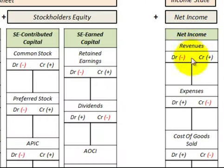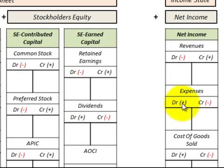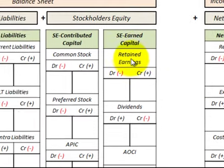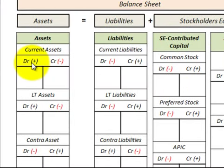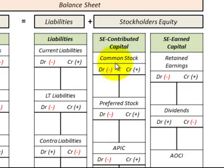Looking at the T-accounts for debits and credits: for revenues, a debit decreases and a credit increases. For expenses it's the opposite — debit increases expenses, credit decreases. The same applies to cost of goods sold, since that's essentially an expense. For assets, debit increases and credit decreases. For liabilities, debit decreases and credit increases, and the same applies to contributed capital and earned capital.